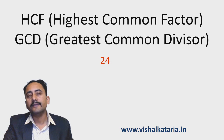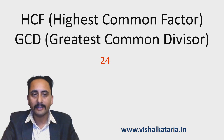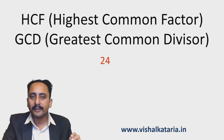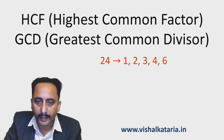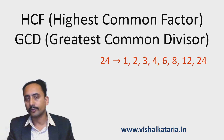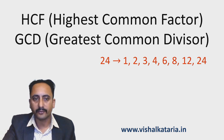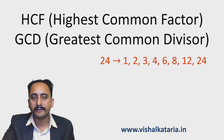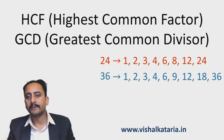First let us understand the meaning of HCF, then we'll see how to calculate it. I've taken the example of 24. All the factors of 24 are: 1, 2, 3, 4, 6, 8, 12, and 24. These are the factors — or divisors — of 24. Now let me write the factors of 36: 1, 2, 3, 4, 6, 9, 12, 18, and 36.